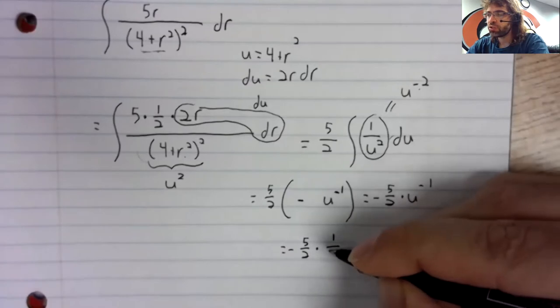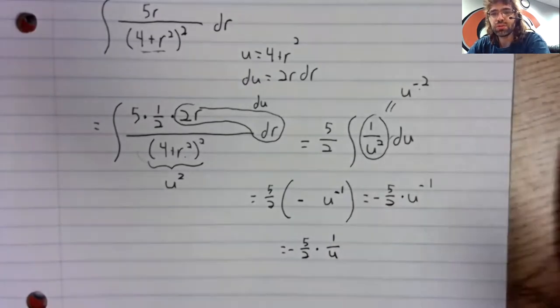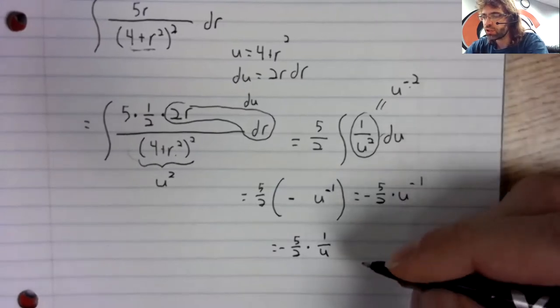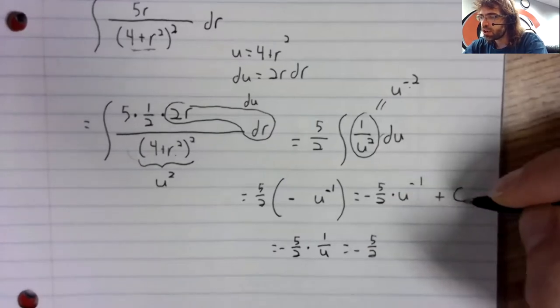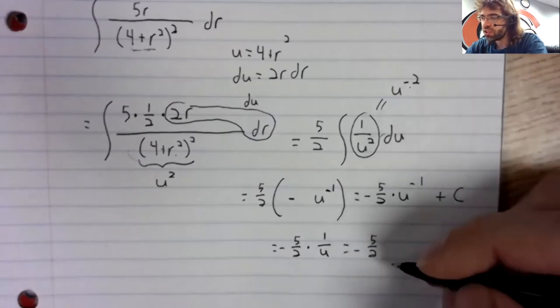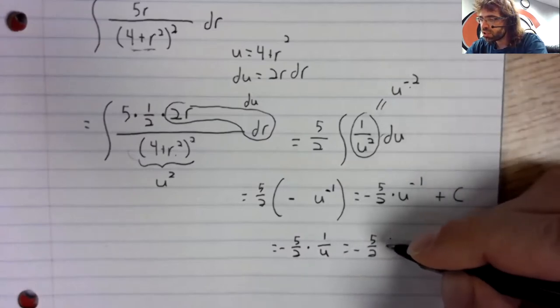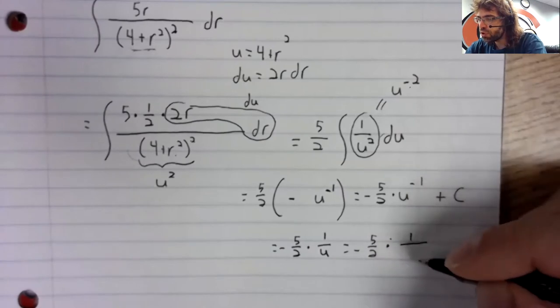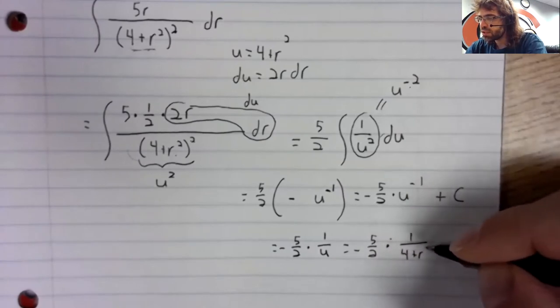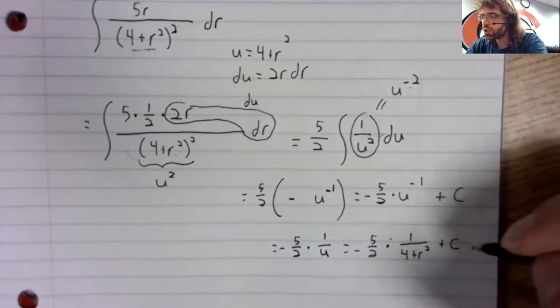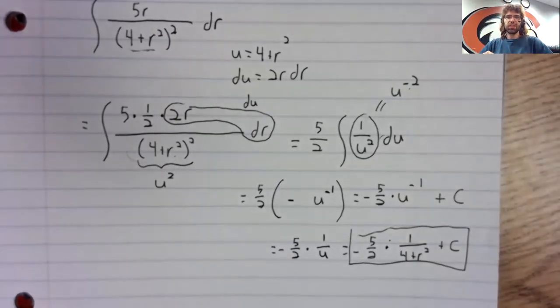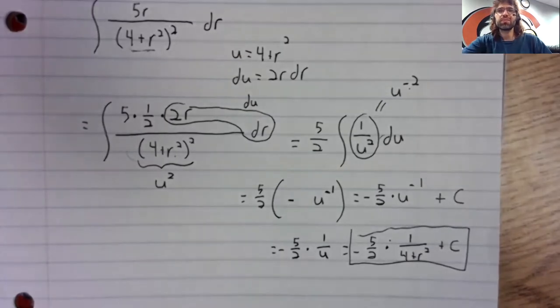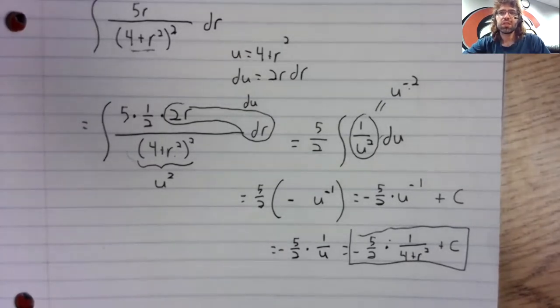U to the negative first, we could, if we wanted to, rewrite as 1 over u. By the way, let's not forget our constant of integration. The real important thing is to go from u back to our original variable. And that gives us this. So be able to do integrals like this.